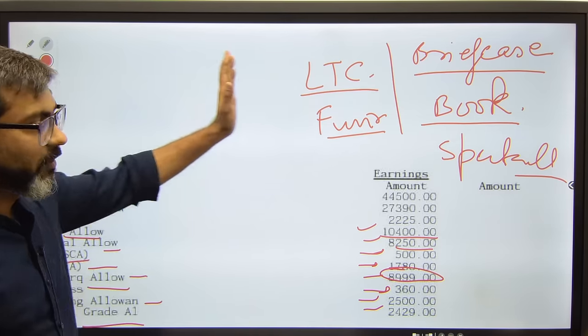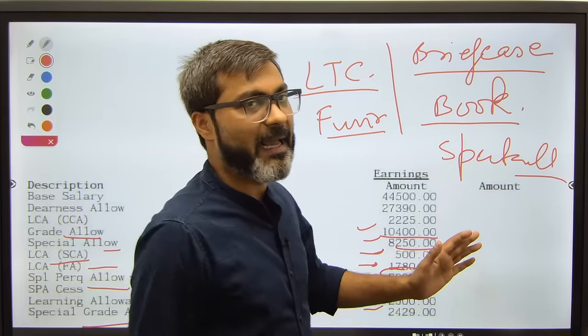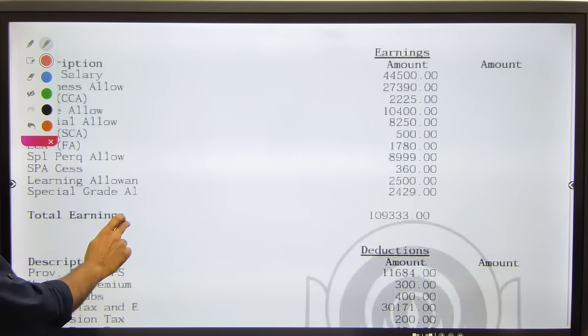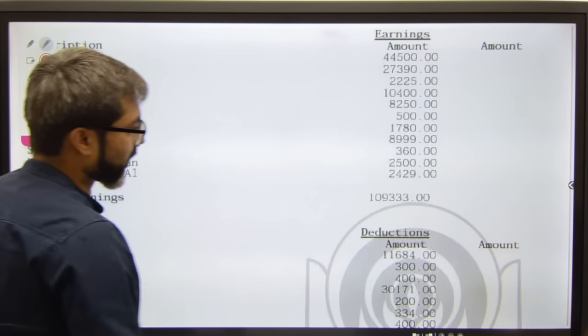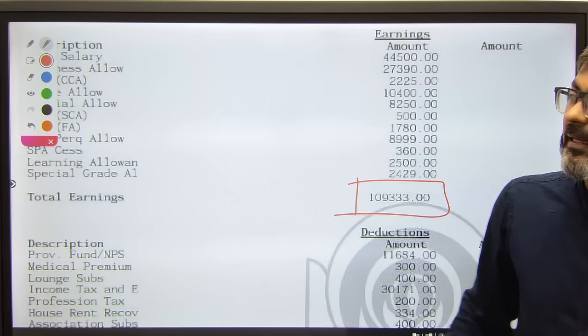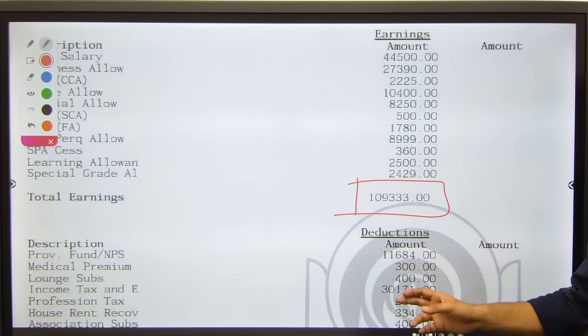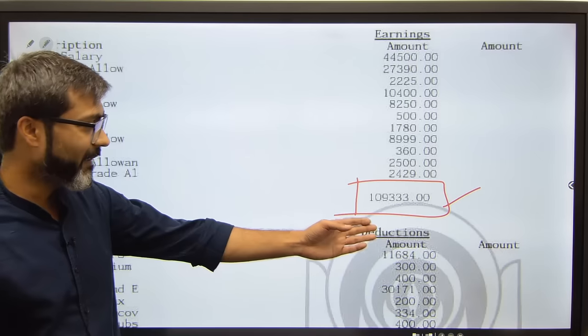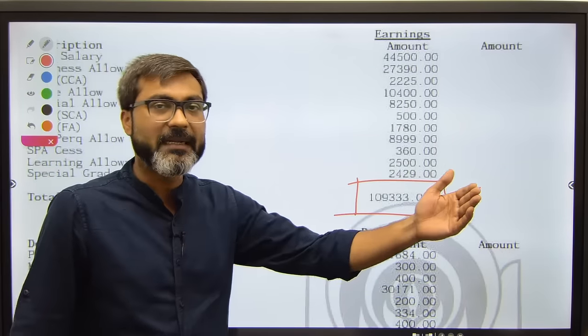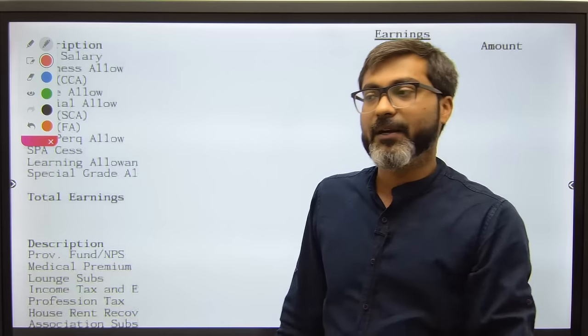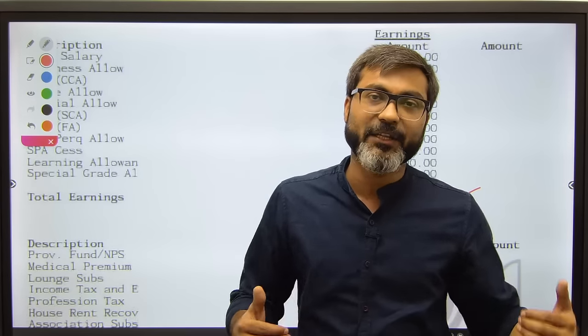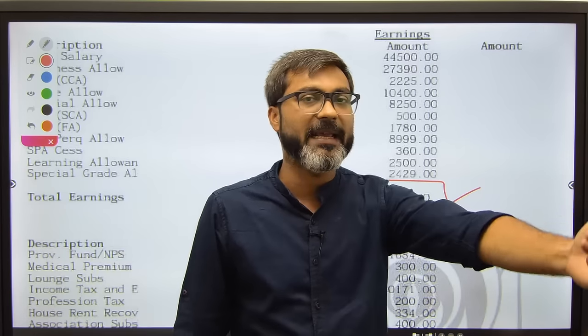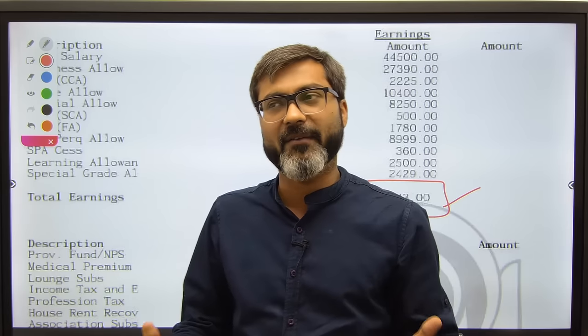Everything you'll get if you're selected as a NABARD Grade A officer. Now talking about the total earnings in a month - that will be around one lakh nine thousand, or you can say one lakh ten thousand. In this officer's case for the month of July, he got rupees one lakh nine thousand three hundred and thirty-three. I think that is a beautiful amount if you are starting a career, and looking at the present scenario of the Indian economy, rupees one lakh is a decent amount to sustain a decent life.